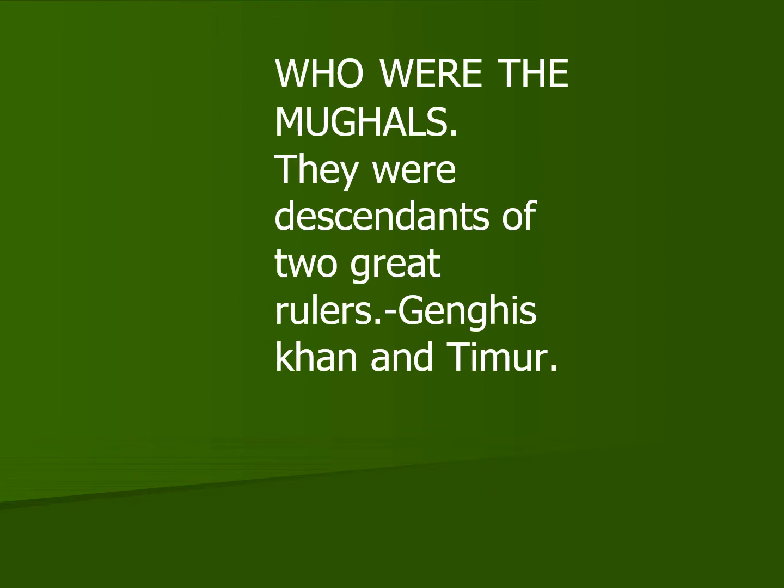Now the Mughals were descendants of two great rulers. From the mother's side they were descendants of Genghis Khan, who died in the year 1227 and who was a ruler who ruled over parts of China and Central Asia. From the father's side they were successors of Timur, who died in 1404 and was the ruler of Iran, Iraq and present-day Turkey.